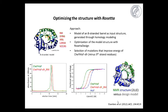So while we were seeing that the fragments retained their structural integrity, it seemed that the interface was not optimal. And in order to optimize this, we used the computational program Rosetta in order to optimize our protein. So the approach was that we first made a model of an eight-stranded barrel that we used as an input structure that we had generated through homology modeling, then we applied Rosetta design in order to optimize this model structure. And we selected mutations that improved the energy of this CheY-HISF without the strand forming residues. So CheY-HISF SFR.